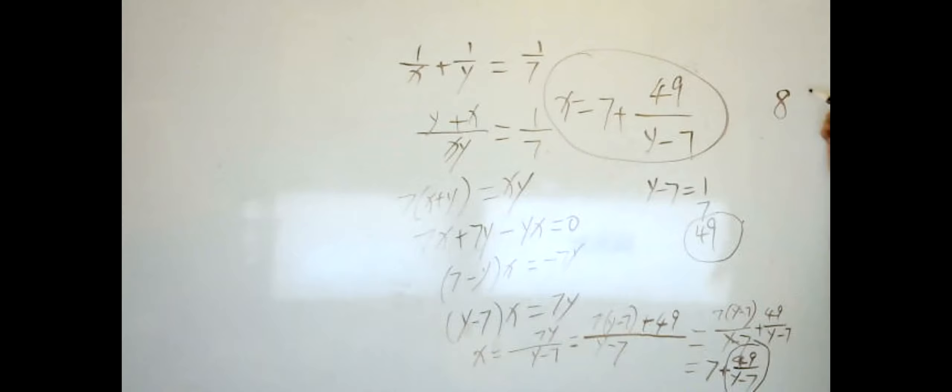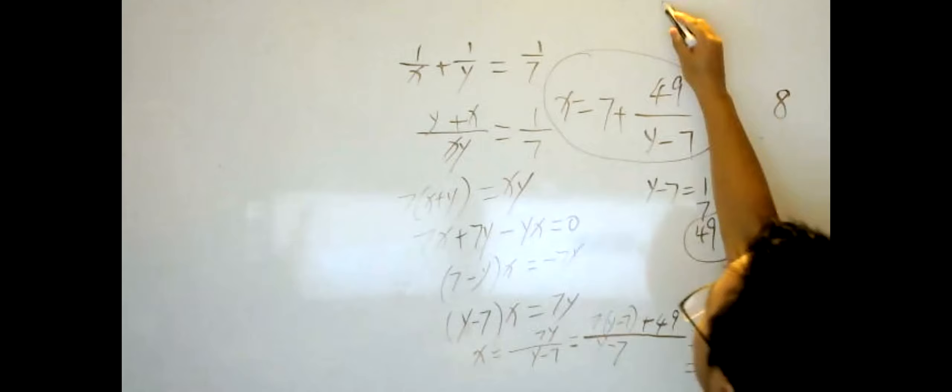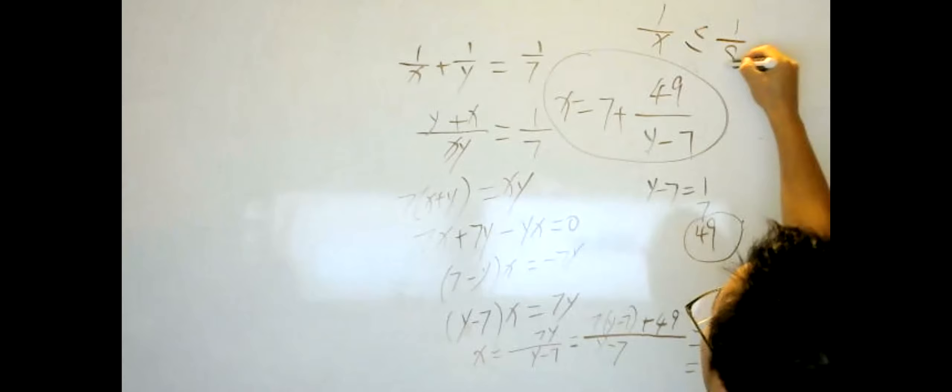So we know y minus 7 must be either 1 or 7 or 49. There's only three values possible to become a denominator so that to make this part an integer, right? So when this equals to 49, when denominator equals 49, x becomes the minimum value, which is 8. That's the minimum, okay. And to answer the question what's the greatest possible of 1 over x, so 1 over x, the greatest one will be 1 over 8. Make sense? So this 1 over 8 is the greatest value of 1 over x.